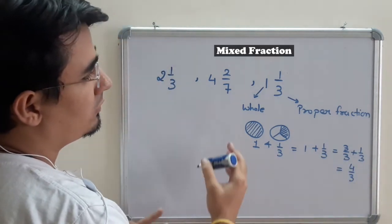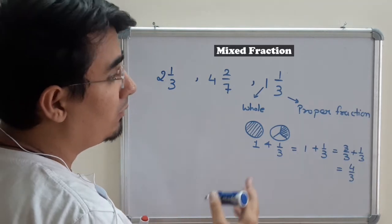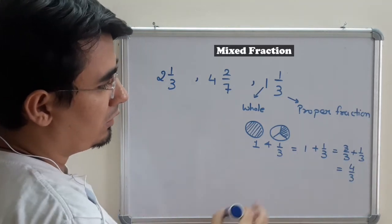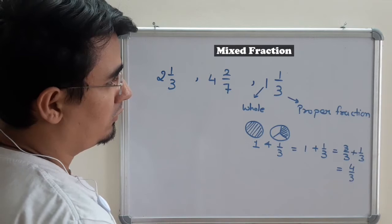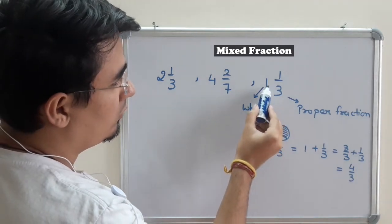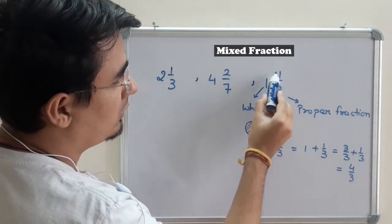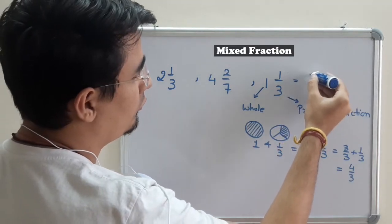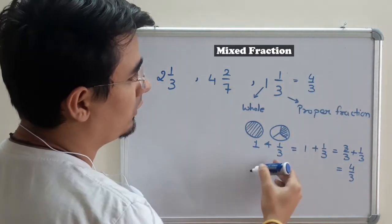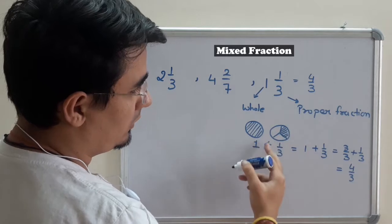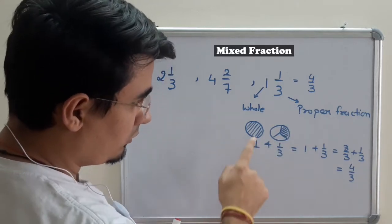So mixed fractions have been derived from improper fractions. From another perspective, 3 times 1 is 3, plus 1 is 4. So it gives you 4 upon 3 only. This is the visual way.